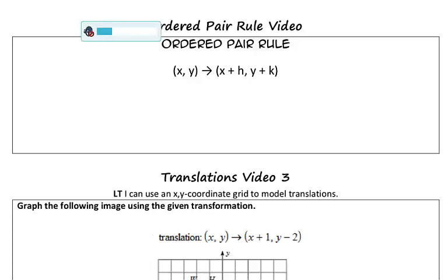Hi everyone, this is Ms. Helms, and this is a quick video to help you understand how to use an XY coordinate grid to model translations using these ordered pair rules. In general, an ordered pair rule is a way to transform points on a coordinate grid.